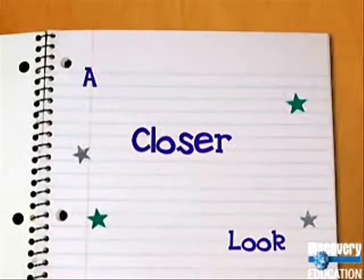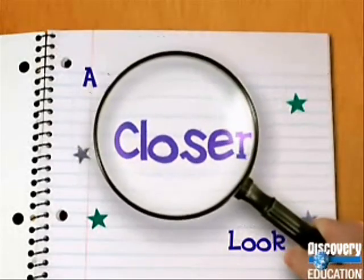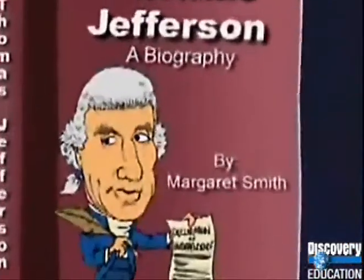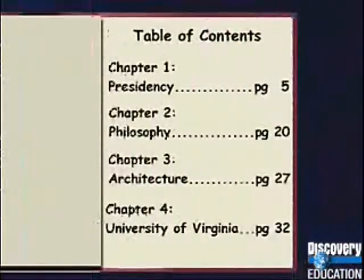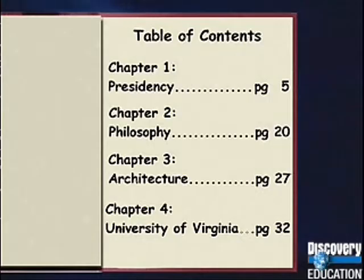Let's take a closer look at the story about Thomas Jefferson and how to use the different parts of a book. The table of contents is located in the front of the book. It lists the chapter titles in the book. Look at the chapter titles in this book — each chapter talks about a different aspect of Thomas Jefferson's life.